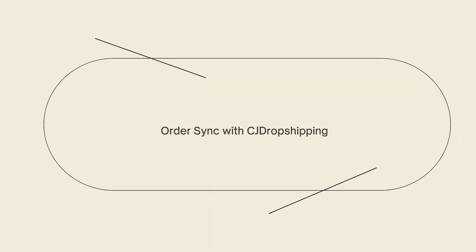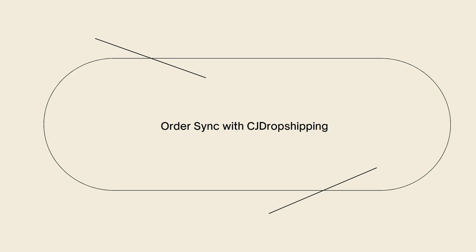Here is some more information you should know. First, orders sync with CJ dropshipping: the CJ dropshipping app installed on your Shopify store will automatically sync the order details with CJ dropshipping, allowing you to process the order directly with them.